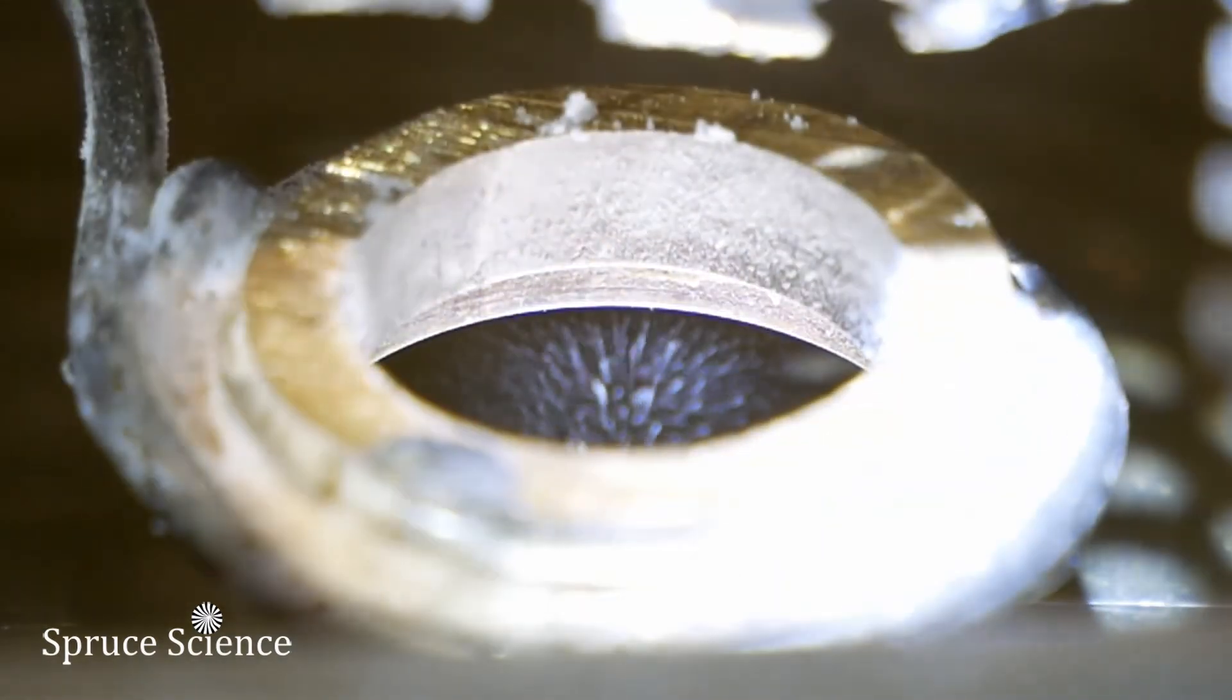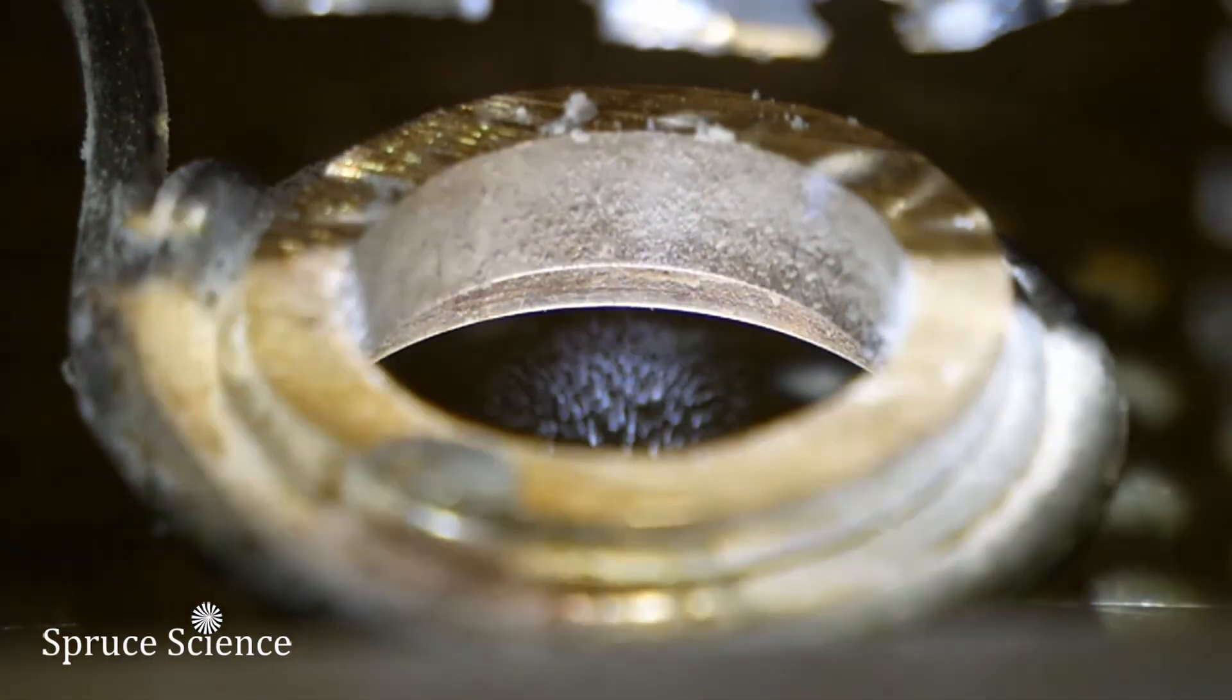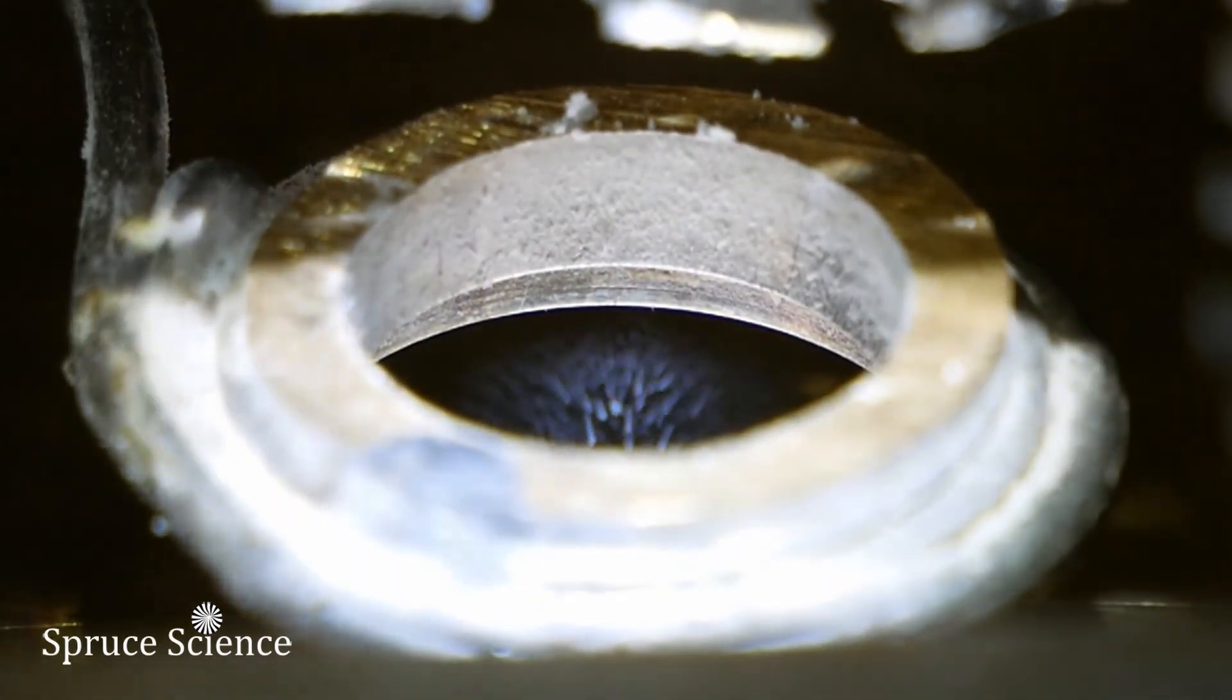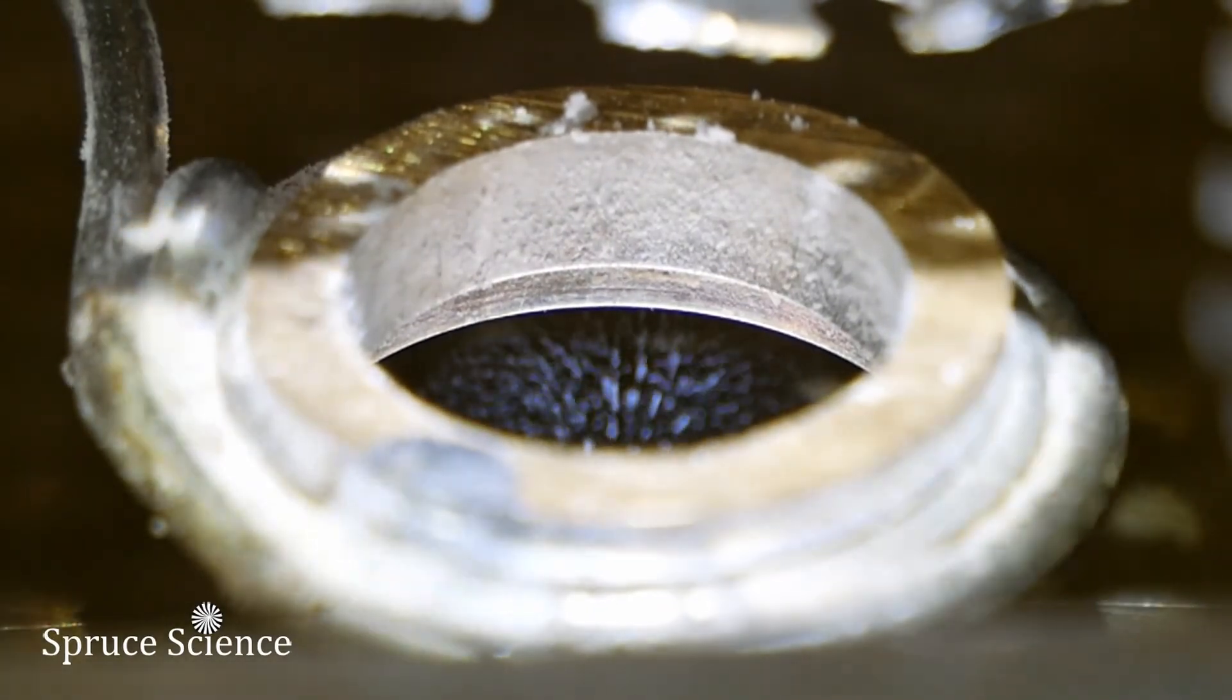Ion traps are widely applied in chemistry and physics laboratories. They can be used as mass spectrometers, storage devices, and as tools for precision spectroscopy and metrology.